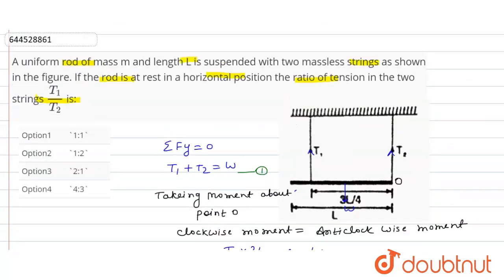See here, 2 is to 1 ratio means option third is correct option. Thank you.